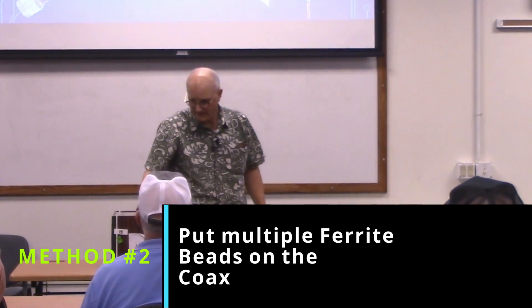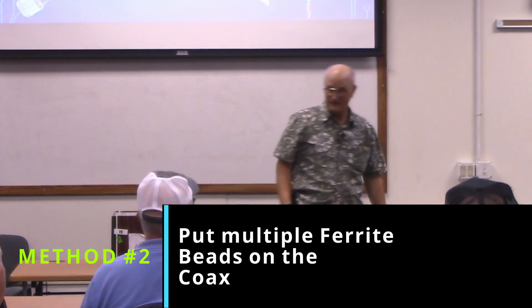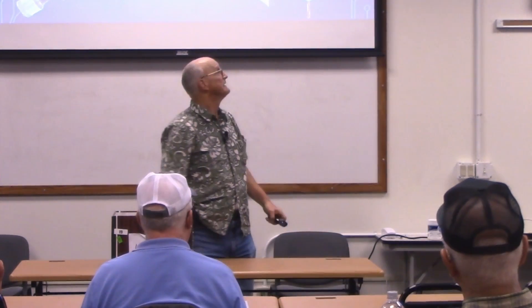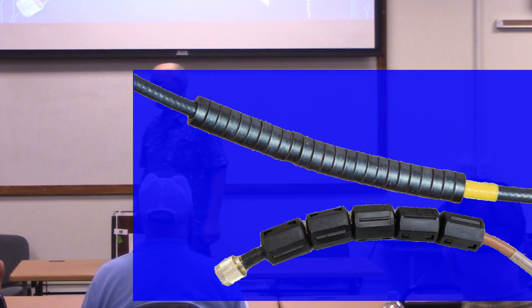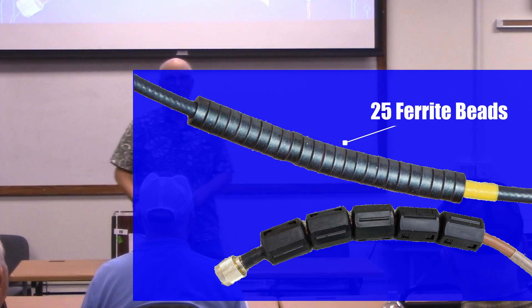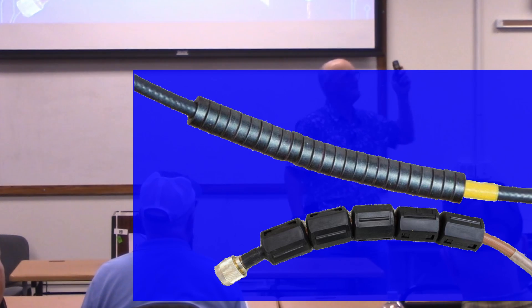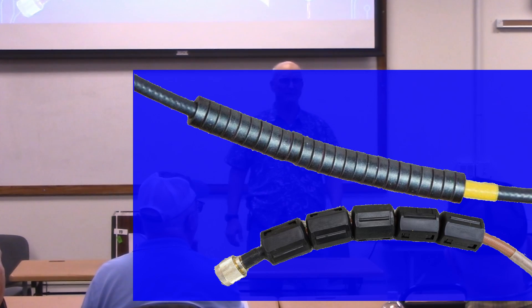Another way to do it is putting lots and lots of ferrite beads on the outside of your coax. These are pictures of commercially available common mode chokes. The one at the top has twenty-five slide-on beads - those you have to put on before you put the connectors on. The one on the bottom has snap-on beads, but you have to be careful with what mix is inside. You probably want the right ferrite mix, because each mix of ferrite material works differently at different frequencies.